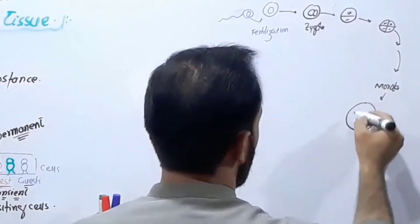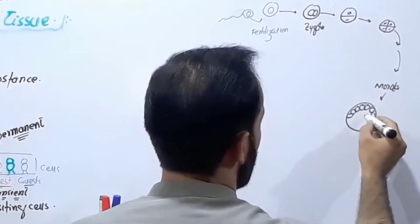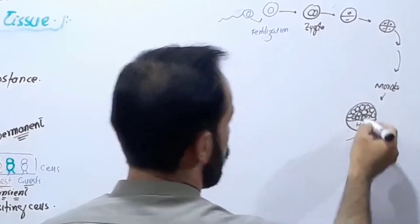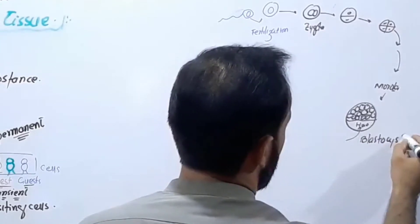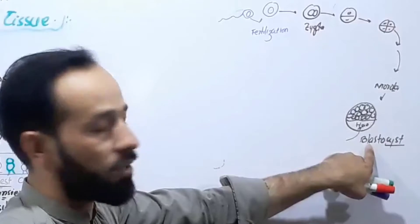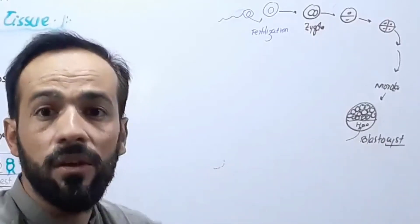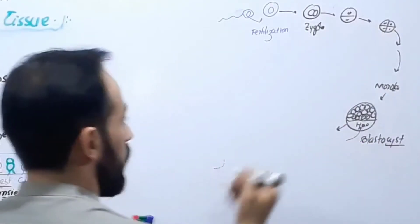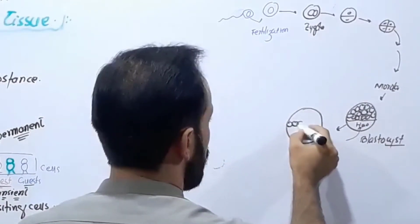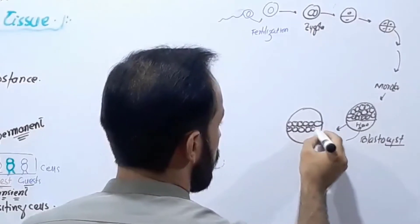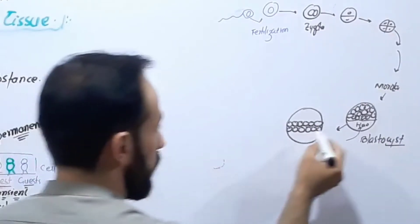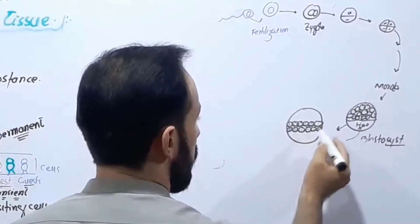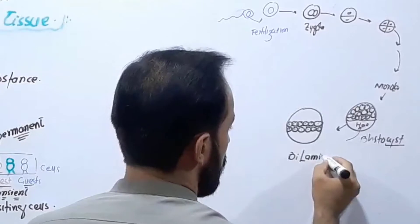After sixteen cells, it becomes a morula, and then it becomes a blastocyst. In the blastocyst, all the newly produced cells come to one site, water enters inside, and the blast cells are always dividing and producing. Then all these cells arrange themselves in two layers — this is called the bilaminar disc.